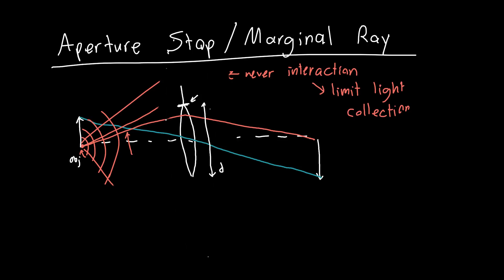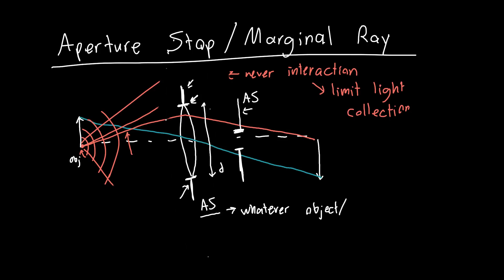This is dealt with using the language of the aperture stop. The aperture stop is defined as whatever element is limiting our light collection ability. Sometimes this won't be a lens — we might introduce a physical stop, some physical object that blocks light from getting further into the system. Really, the aperture stop is whatever object or element is limiting the maximum angle that we can accept light at — limiting our angle of collection.